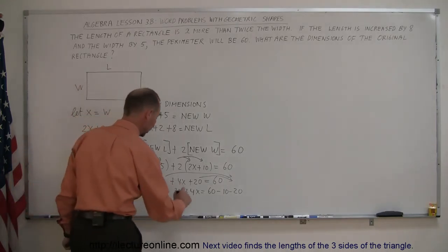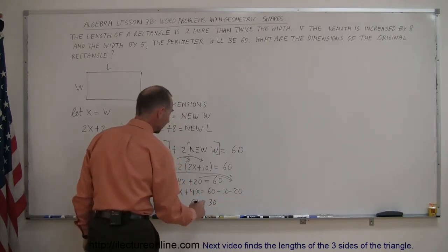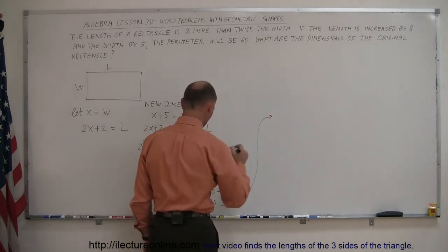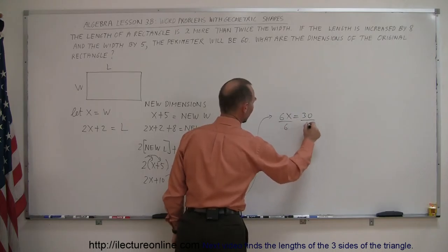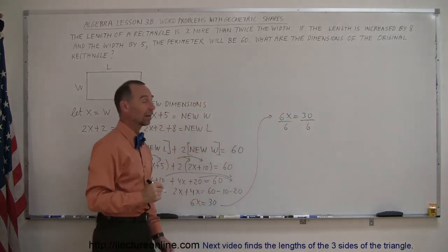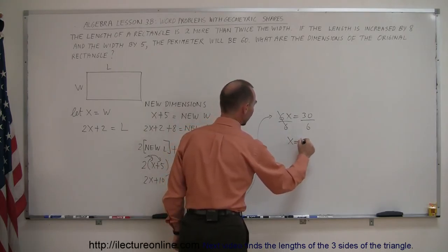Now we combine like terms. So 2x plus 4x is 6x. And 60 minus 10 is 50 minus 20 is 30. Let me move over here because I'm running out of room. 6x equals 30. Now we divide both sides of the equation by the numerical coefficient from the x, the number before the x. That cancels out. So x equals 5.